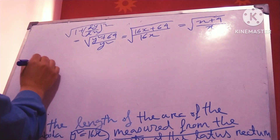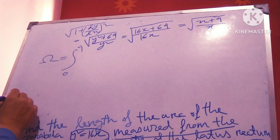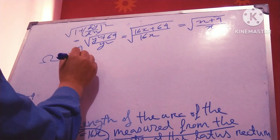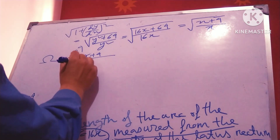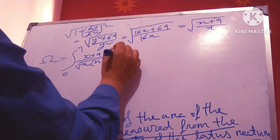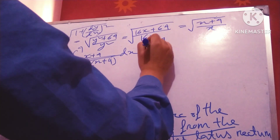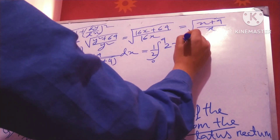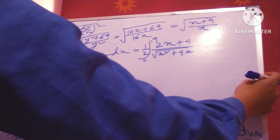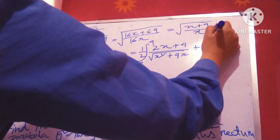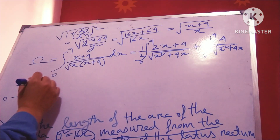So we get the value as x plus 64 divided by 16x simplified. The arc length integral is from 0 to 4, because the extremity point of the latus rectum is at (4, 4), giving us the integral from 0 to 4 of root over x(x+4), or equivalently root over x² + 4x.